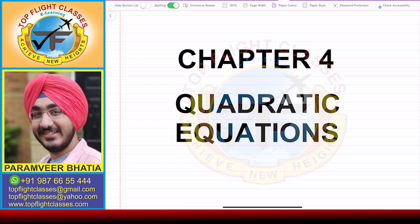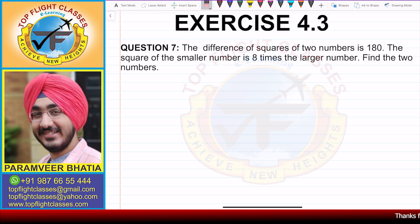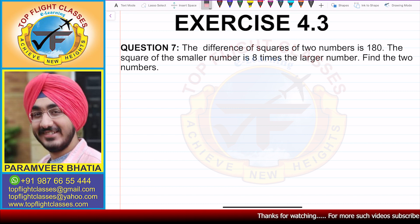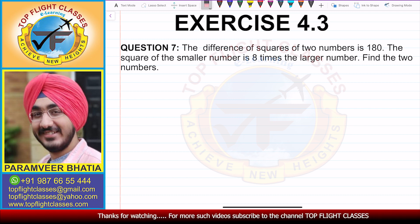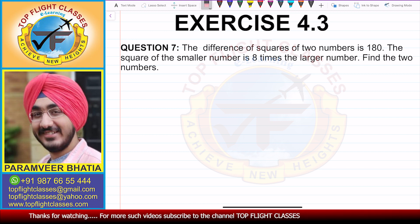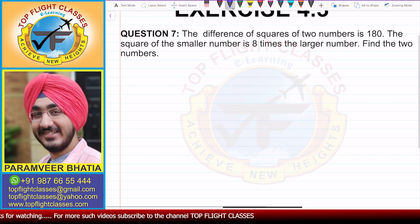Hey guys, welcome to my channel Top Flight Classes. In this video, we are going to solve question number 7 of exercise 4.3. Question number 7 says: the difference of squares of two numbers is 180. The square of the smaller number is 8 times the larger number. Find the two numbers. This is a very important question.